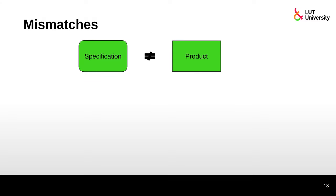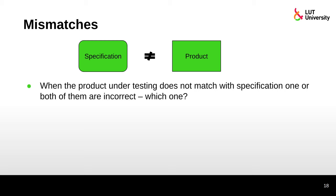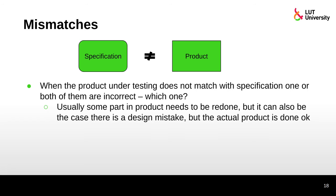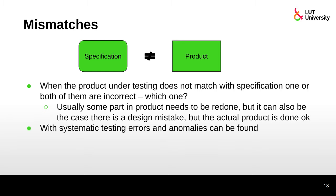Testers can find mismatches: the specification and the product are not the same. Which one is incorrect? Was the product built like the specification, or is the product what the customer wanted? Usually the product needs to be redone if it doesn't meet the specification, but there can be cases where the product itself is okay but there is a design mistake. Systematic testing can find errors and anomalies, and in the end the product needs specification.